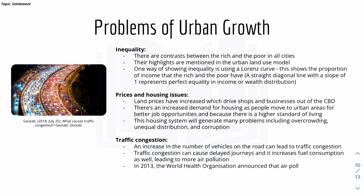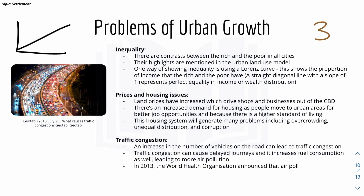There is also inequality — contrasts between the rich and the poor exist in all cities, as highlighted in the urban land use models. One way to show inequality is using the Lorenz curve, which will be explored more in Theme 3. It shows the proportion of income held by the rich and poor — if it were a straight line with slope 1, it would represent perfect equality in wealth distribution, but that is rarely the case.